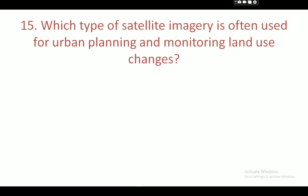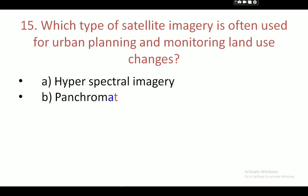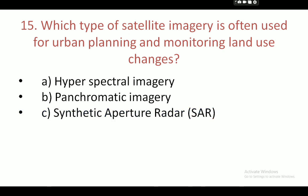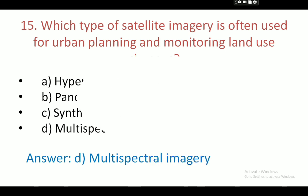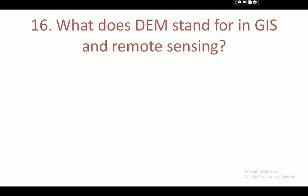Next question: which type of satellite imagery is often used for urban planning and monitoring land use change? Your options are: hyperspectral imagery, panchromatic imagery, synthetic aperture radar, and multispectral imagery. Your correct answer is multispectral imagery.